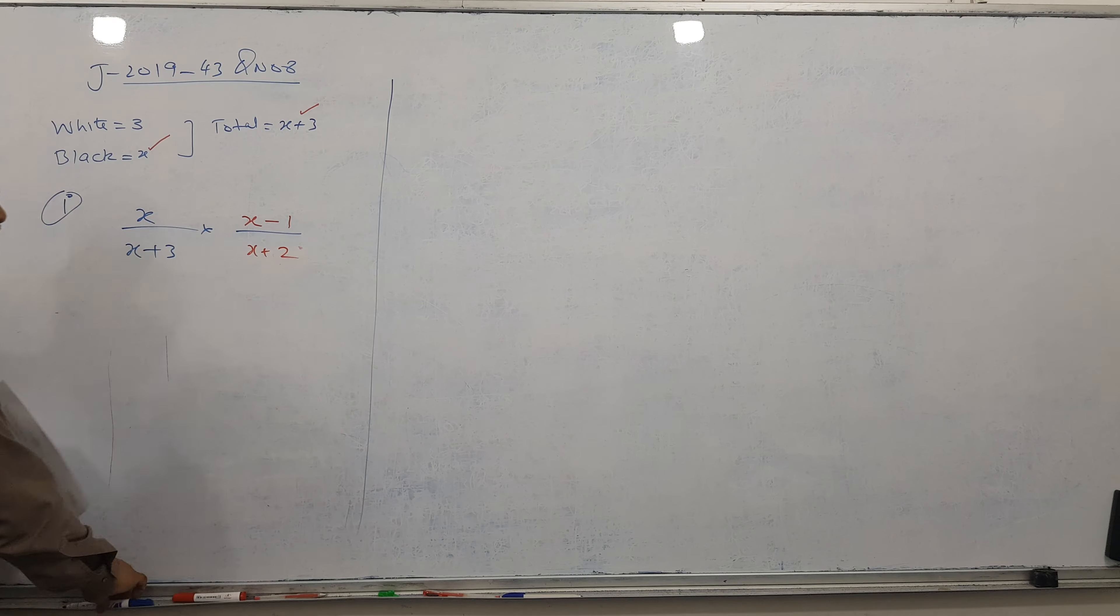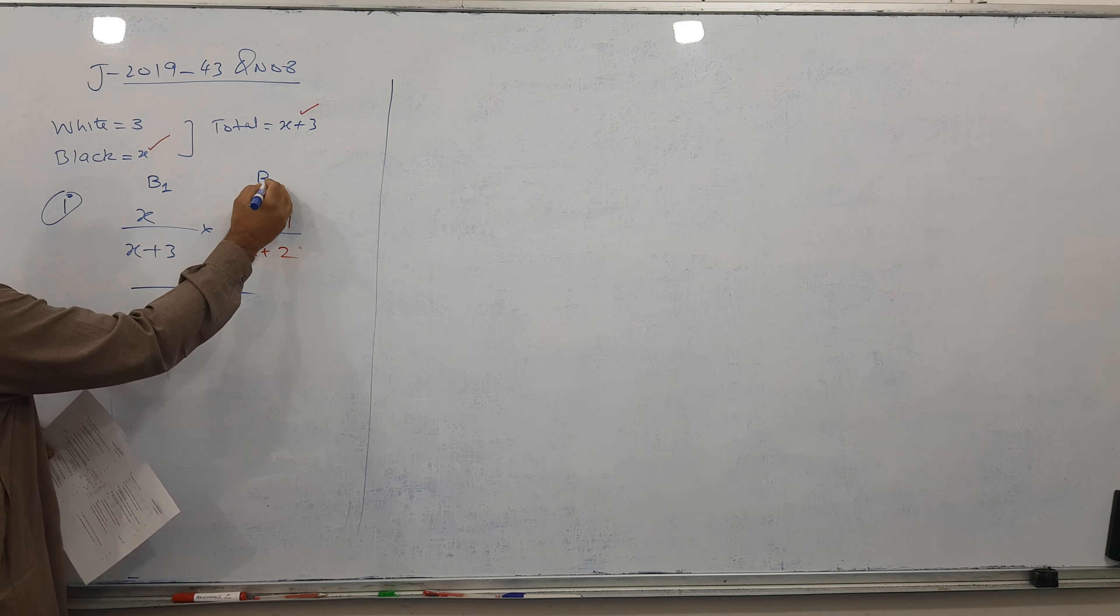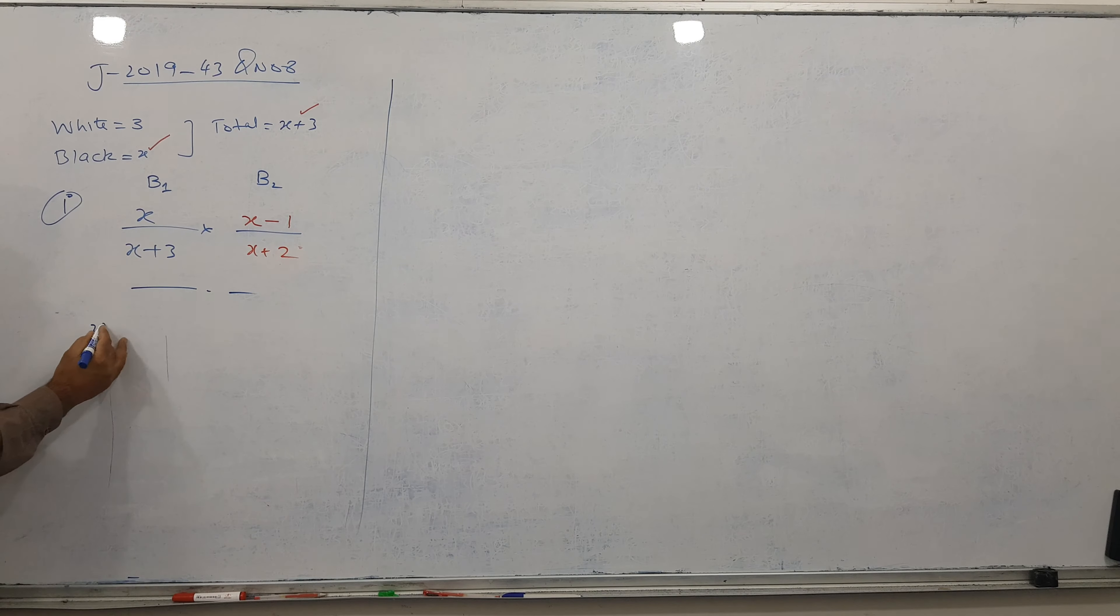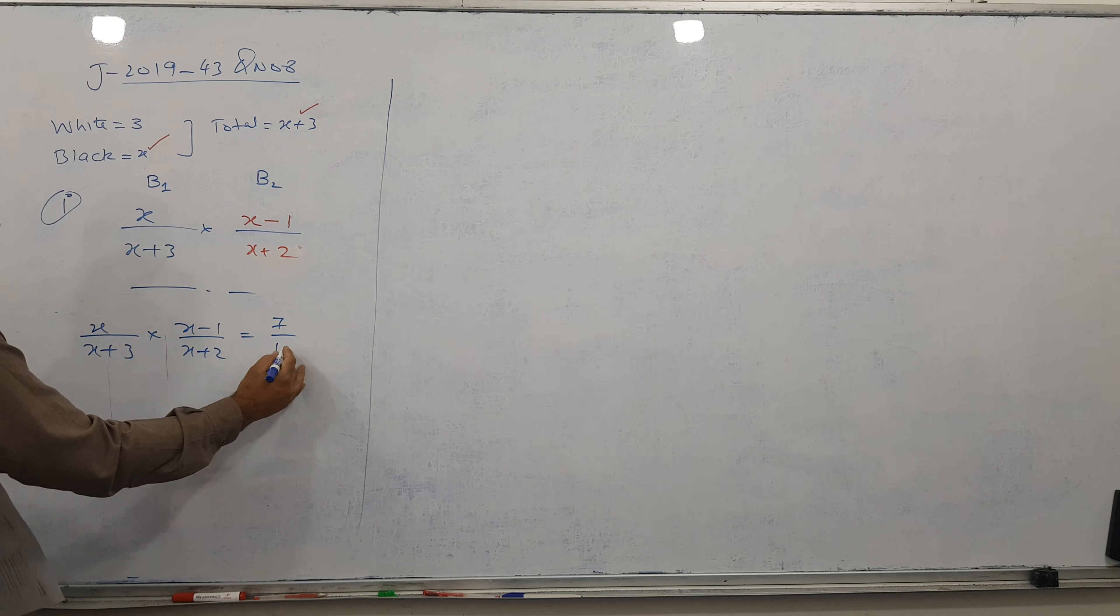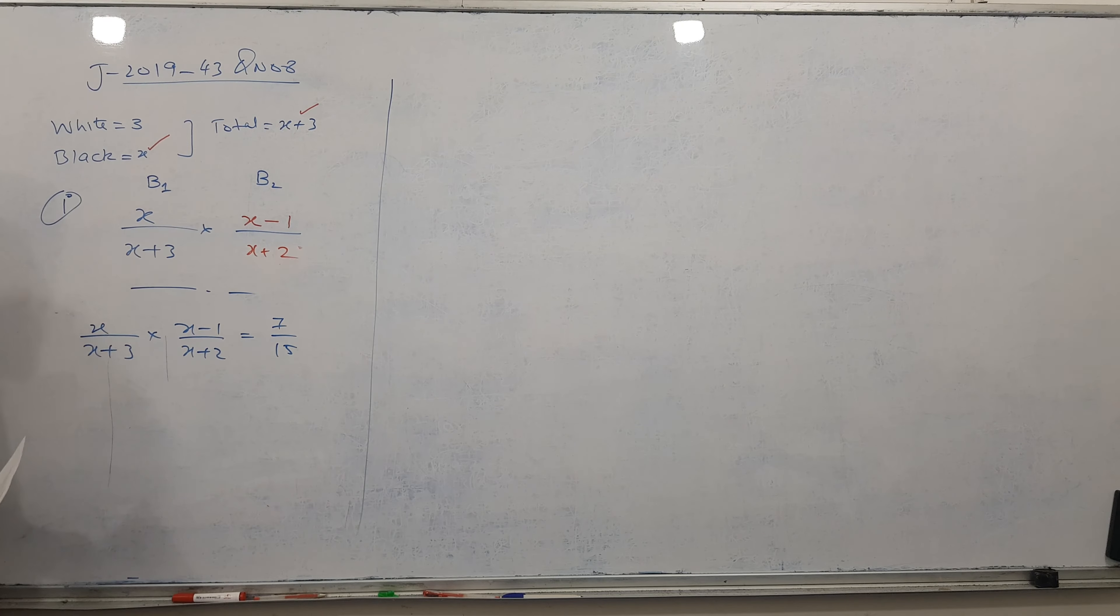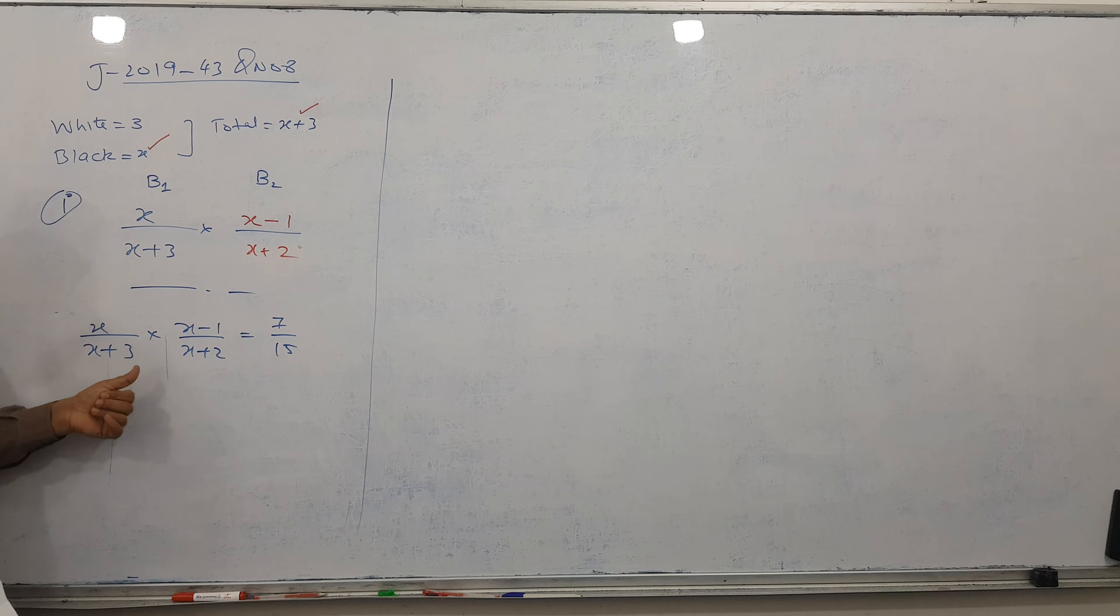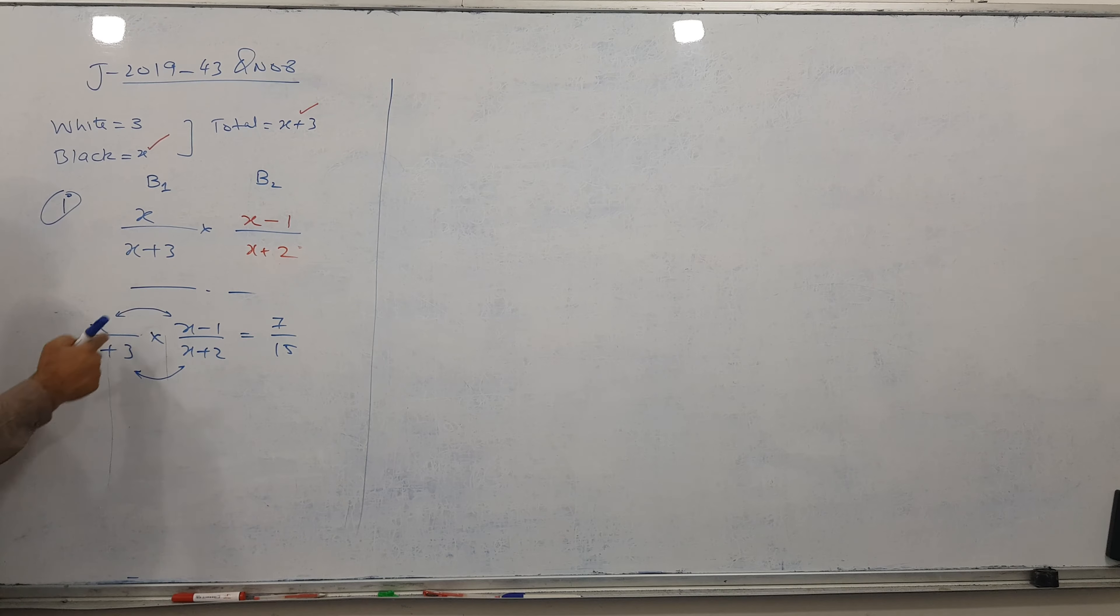Part number 2. He said that the probability of 2 black counters equals 7 by 15. So we can say X over X plus 3 times X minus 1 over X plus 2 equals 7 over 15. When you have an equal sign in the middle, we cross multiply. Top with top, bottom with bottom.